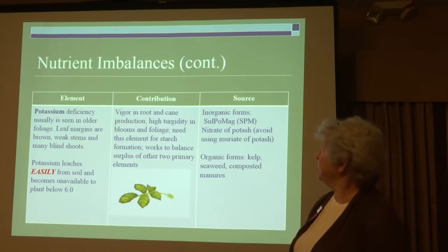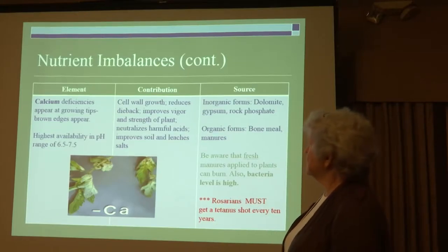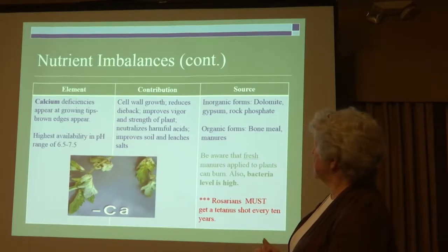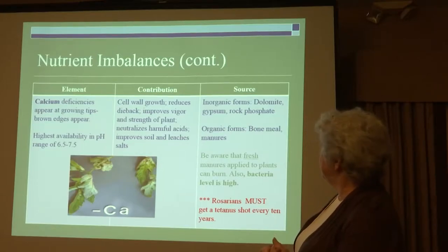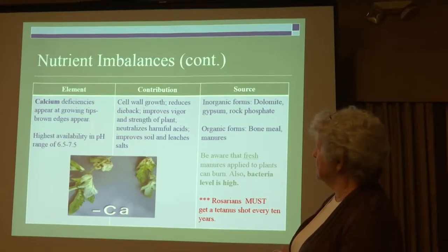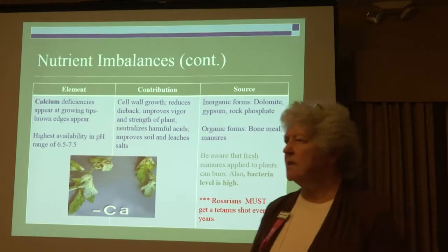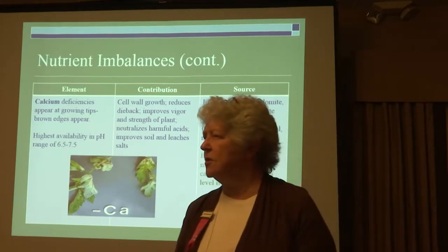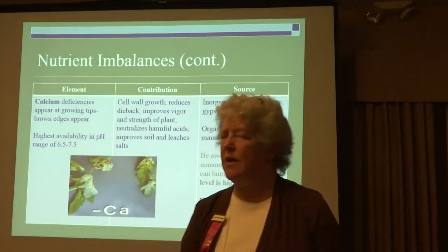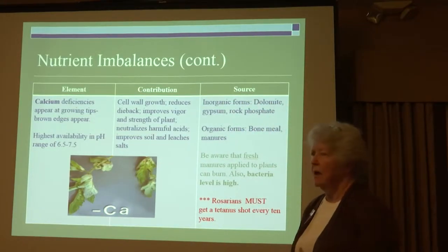Calcium deficiency: this is a bad picture of tomato leaves lacking calcium. The leaves are starting to curl up with brown edges and brown spotting. You don't often see this in roses — I think we're pretty good on calcium.